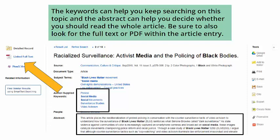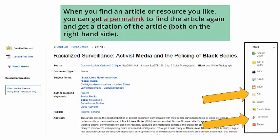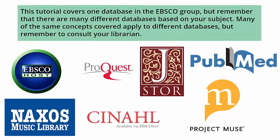Be sure to also look for the full text or PDF within the article entry. When you find an article or resource you like, you can get a permalink to find the article again and get a citation of the article — both can be found on the right-hand side of the resource entry. This tutorial covers one database in the EBSCO group or interface, but remember that there are many different databases and interfaces based on your subject.